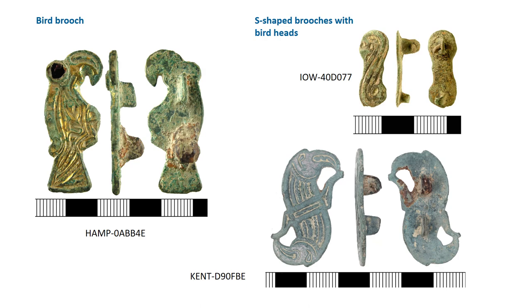That ends the most common circular brooches. Other shapes of brooch are really not at all common and are largely found only in Kent, the Isle of Wight and Hampshire. These include bird brooches and S-shaped brooches with bird heads.